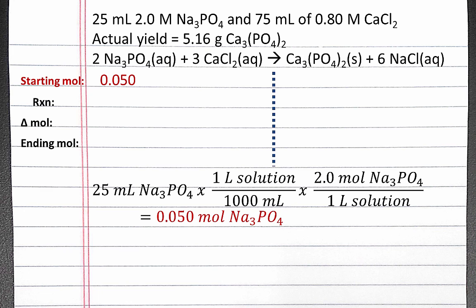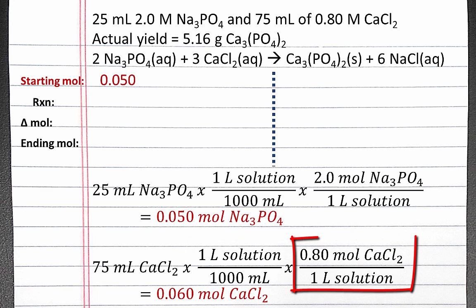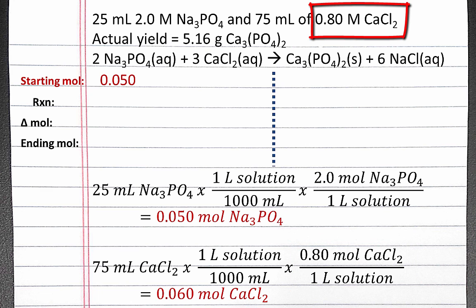We can do the same thing with calcium chloride. We have 75 milliliters of calcium chloride solution. We can convert from milliliters to liters of solution, and then from liters of solution to moles using the molarity of calcium chloride. When we multiply this out, we get 0.06 moles of calcium chloride.